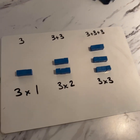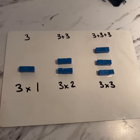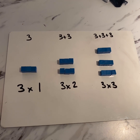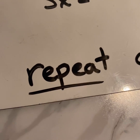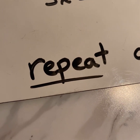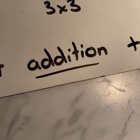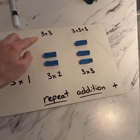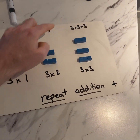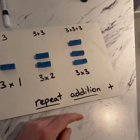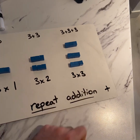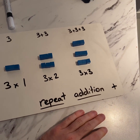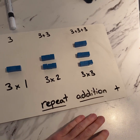If you zoom out and look at it, what do you notice? What's happening here? You might have spotted that it's repeat addition. We've got three, three add three, three add three add three. What would three times four be? Could you build it? Pause the video and have a go.